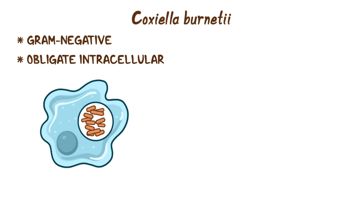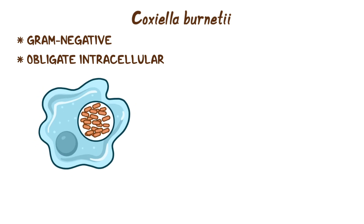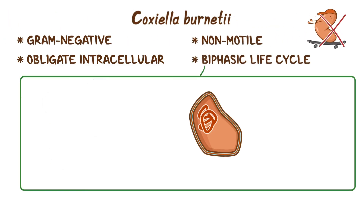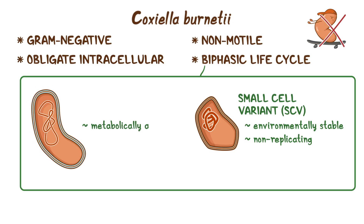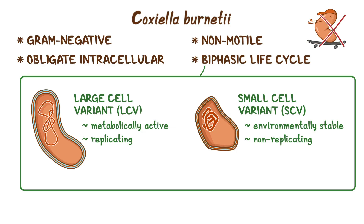Coxiella burnetii is considered a gram-negative obligate intracellular organism, so it can only replicate inside other cells, like macrophages. C. burnetii is also non-motile, and has a biphasic life cycle that consists of an environmentally stable non-replicating form called small cell variant, or SCV, and a metabolically active replicating large cell variant, or LCV.